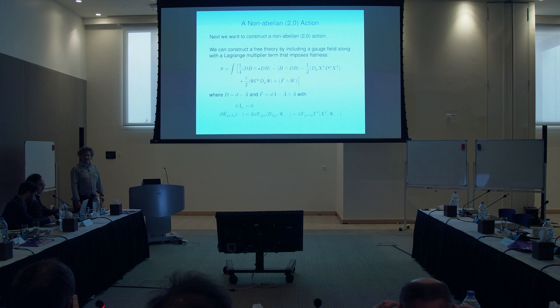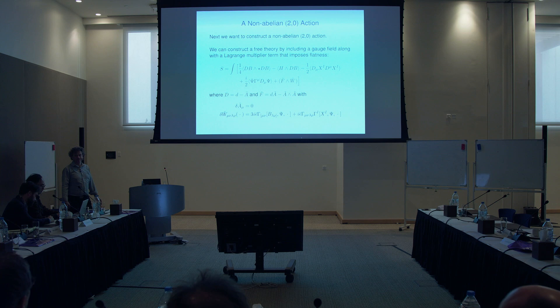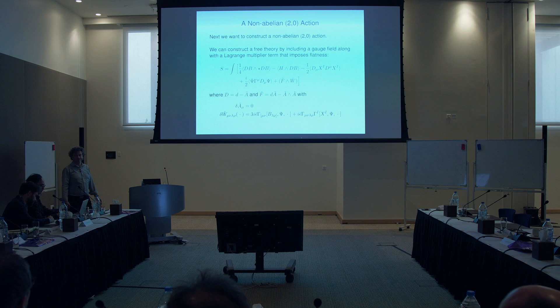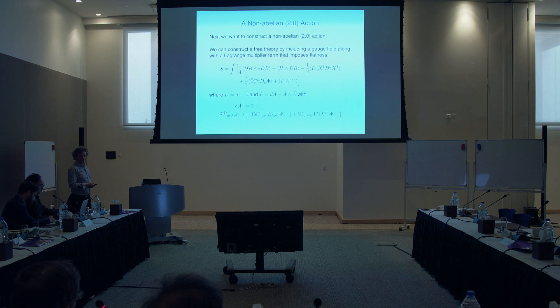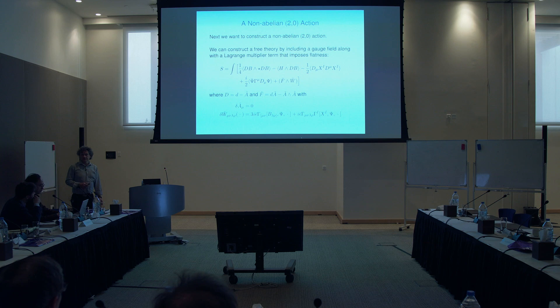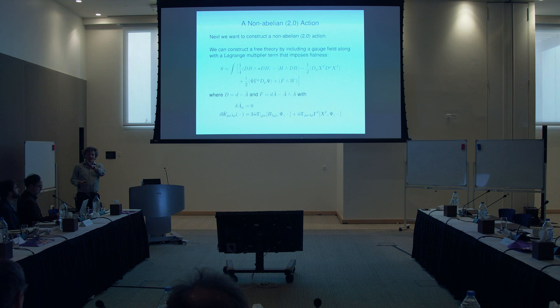This free non-abelian theory describes the moduli space of multiple M5 branes. If you did this for M2 branes you'd recover the moduli space description of ABJM or BLG depending on the representation chosen. The dimension of V is not fixed - it could be the adjoint of some group or the 56 of E7. For M5 branes, one expects the B fields to sit in the adjoint of some group. The Lagrange multiplier W has no propagating dynamics of its own - it's purely a constraint enforcing F = 0.